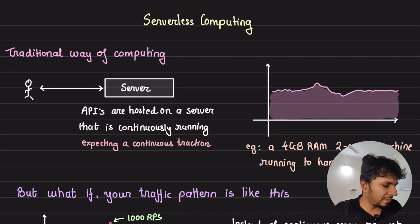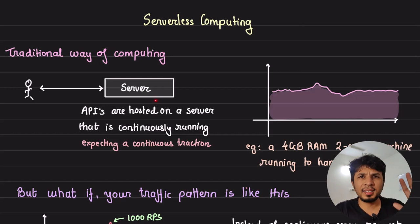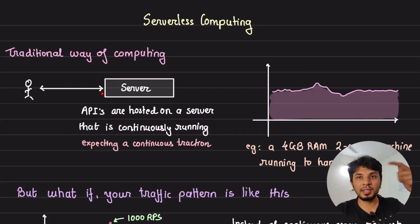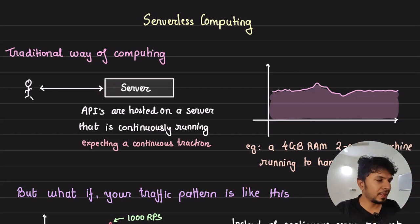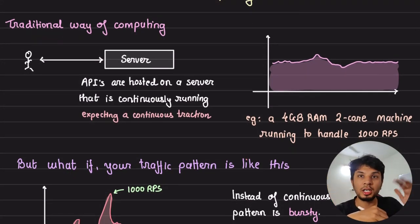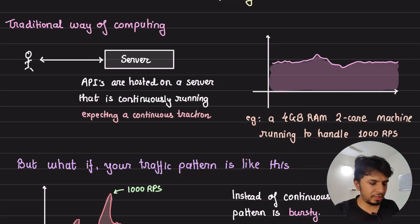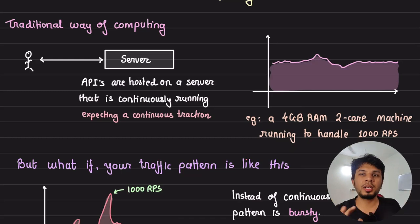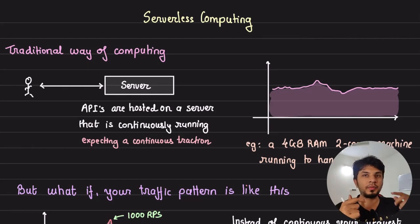In a traditional computation environment, you typically have a server with specific RAM, CPU, and hard disk that runs your code. When an end user makes an API call, the API hits a server, the server does the computation, and returns the response. When we provision a server — say an EC2 machine or a Docker container — we allocate some RAM and CPU to that machine.